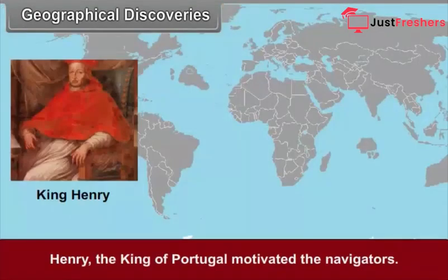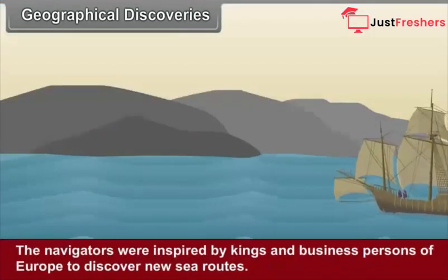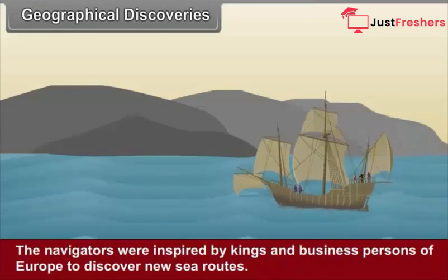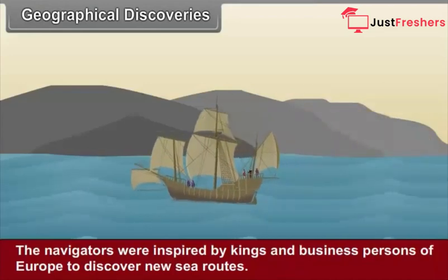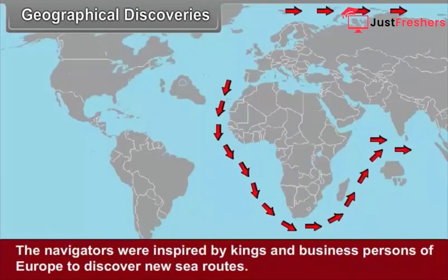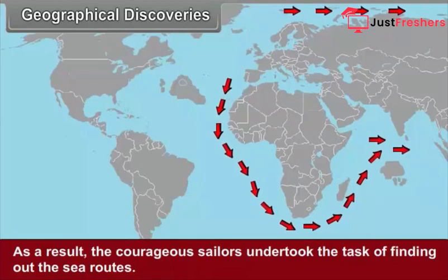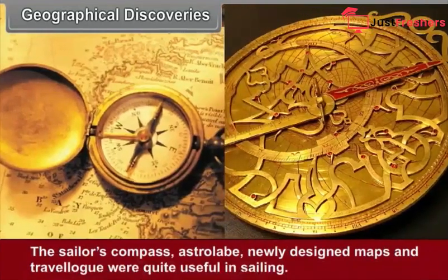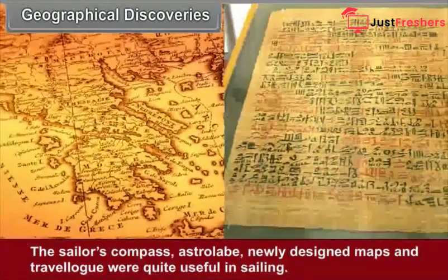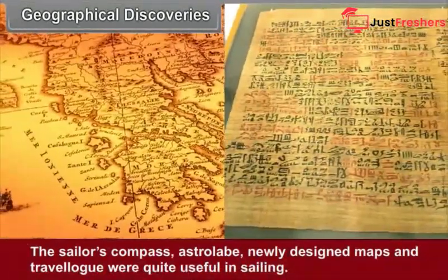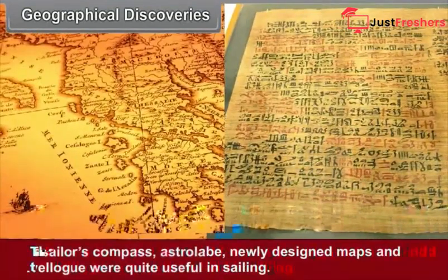Henry, the king of Portugal, motivated the navigators. The navigators were inspired by kings and businesspersons of Europe to discover new sea routes. As a result, the courageous sailors undertook the task of finding out the sea routes. The sailors' compass, astrolabe, newly designed maps, and travelogues were quite useful in sailing.